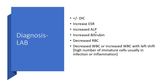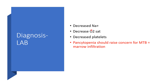Increased ESR, increased ALP, increased bilirubin, decreased RBC, decreased white blood cells. But there may be increased white blood cells with left shift, meaning a higher number of immature cells usually found in infection or inflammation. The sodium level will drop, O2 saturation will drop, platelets will drop, and then there will be bleeding. We can be faced with pancytopenia, and when dealing with pancytopenia, that should raise concern that Miliary TB is infiltrating the bone marrow — bone marrow infiltration leads to pancytopenia.